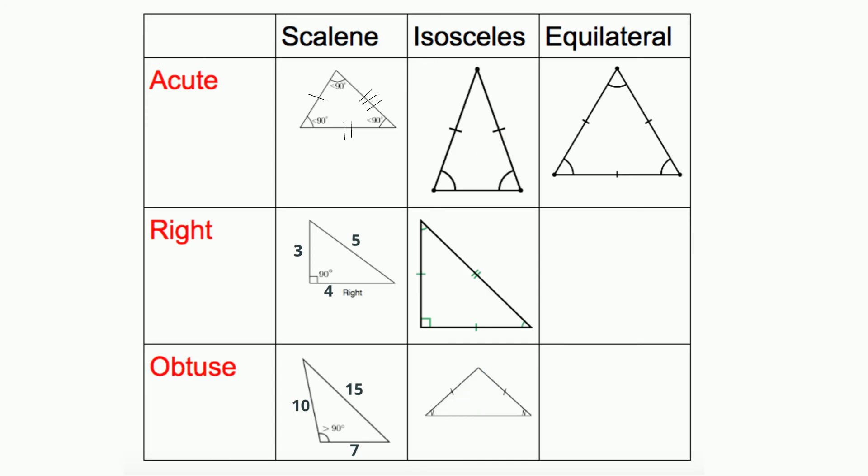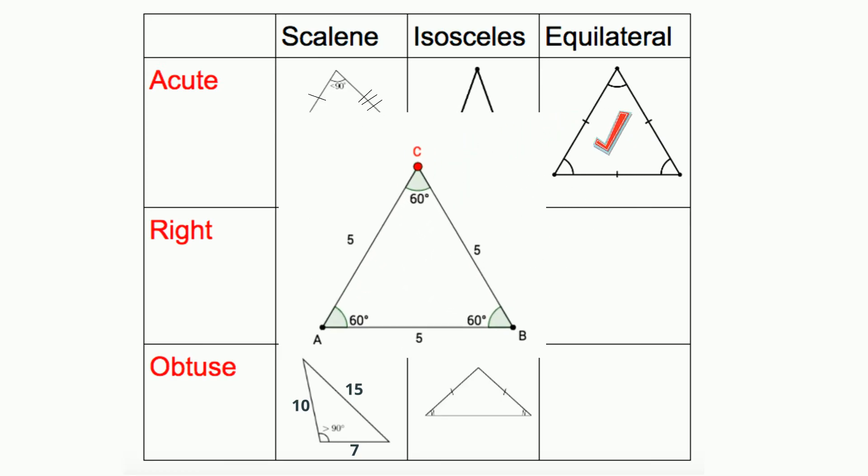And an equilateral triangle can only be acute because in order to have three equal sides that are equal, the angle measures must be equal to 60 degrees.